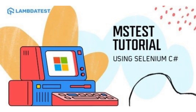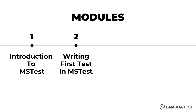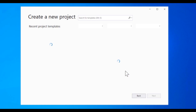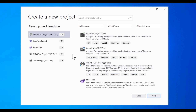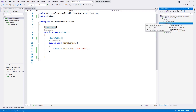Welcome to our next video for Selenium C-Sharp with MSTest Framework in our LambdaTest video series. In this video we'll be talking about how we can write a super simple Selenium test using MSTest Framework. In our last video we created a simple MSTest project using the MSTest .NET Core project template of Visual Studio 2019, and in this video we'll be seeing how we can start writing the code within Selenium C-Sharp.